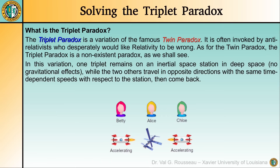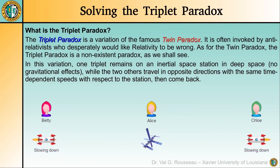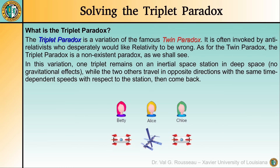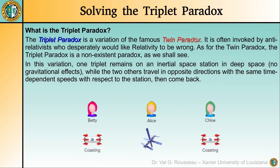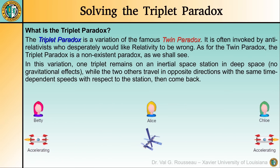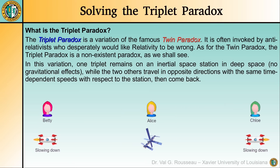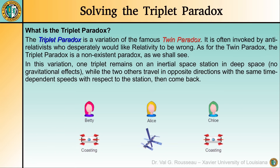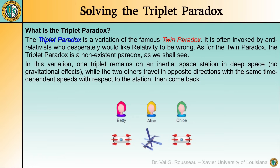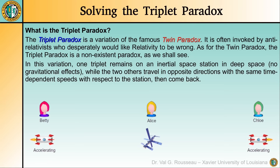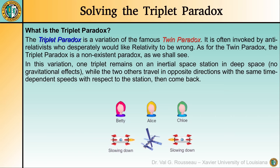In this variation, one triplet which we will call Alice remains on an initial space station in deep space, while her two sisters Betty and Chloe travel in opposite directions with the same time-dependent speeds with respect to the station, and they come back. The reason we consider deep space — meaning far from any massive objects such as planets, stars, and black holes — is to prevent anti-relativists from claiming we forgot to include gravitation. There is no gravitation involved at all in this problem. Note that I used rockets with dual thrusters so they can accelerate in both directions without having to perform a U-turn maneuver.